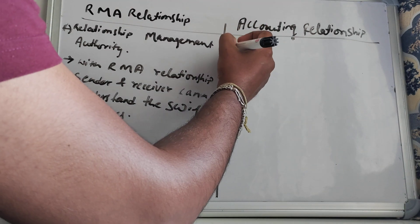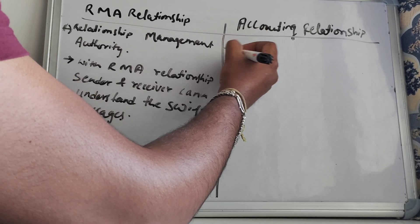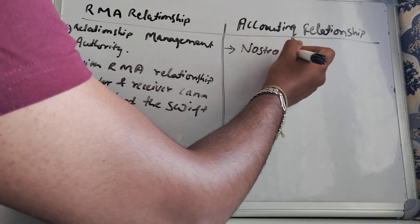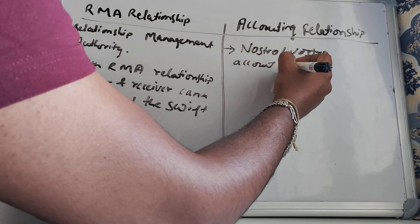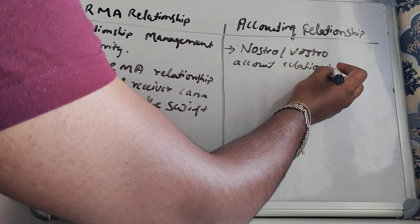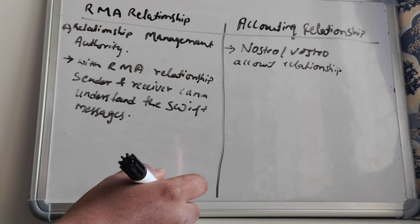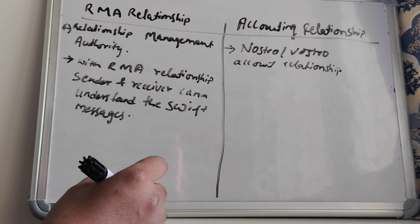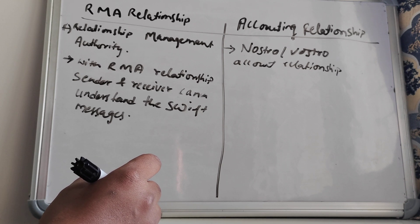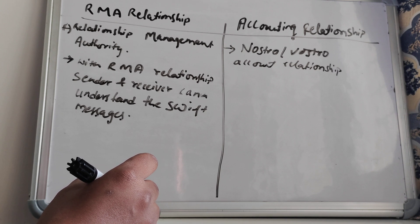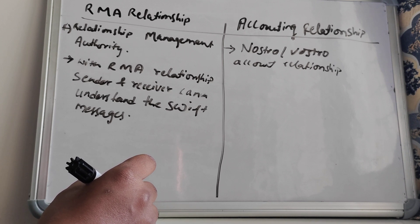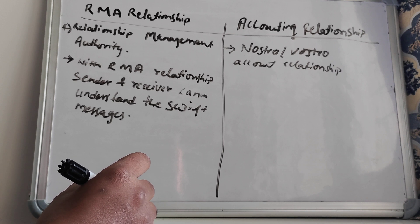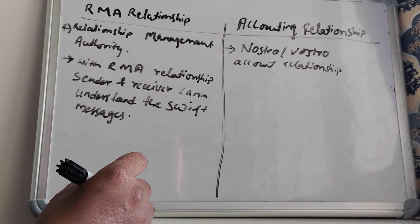Whereas the accounting relationship is nothing but the Nostro or Vostro account relationship. If a bank has a Nostro account in a foreign bank, then the bank is said to have a Nostro account in that foreign bank. And if the foreign bank holds an account in your bank, for your bank it will be the Vostro account. So if you have this Nostro-Vostro accounting relationship, we call it the accounting relationship between the two banks.